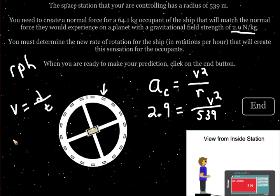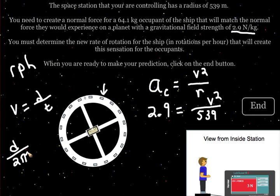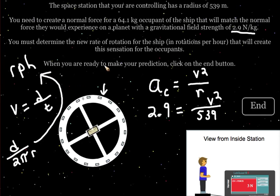Once we know the distance traveled, we can take that distance, divide by the circumference of the space station, and the result will be the number of revolutions it will do in one hour, which was our original goal.